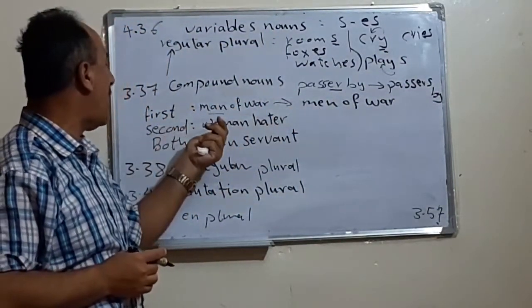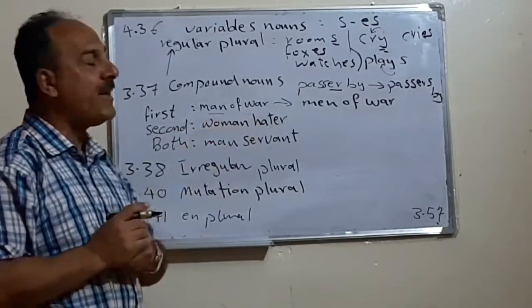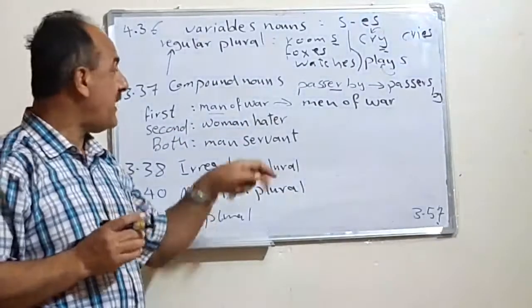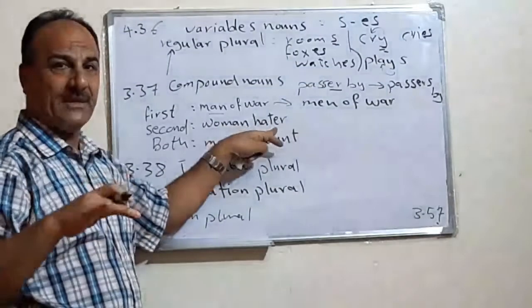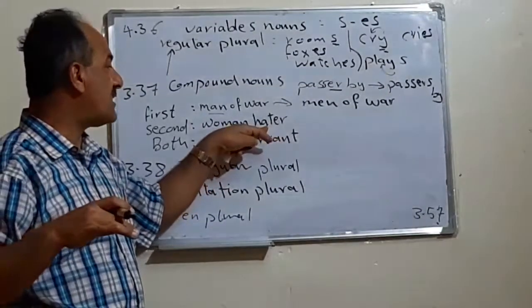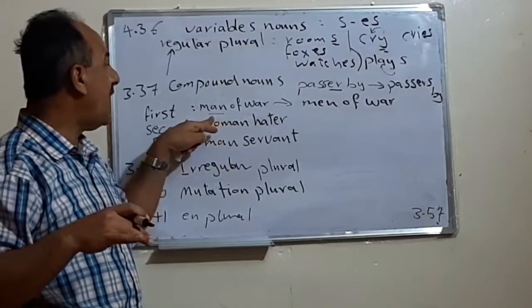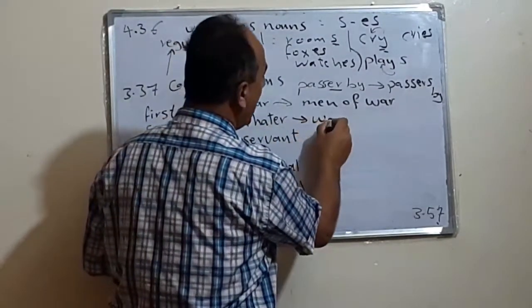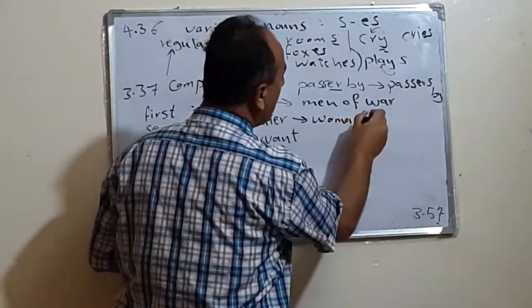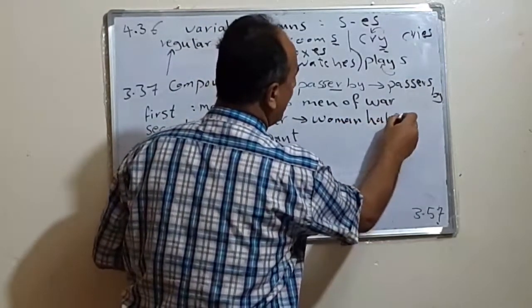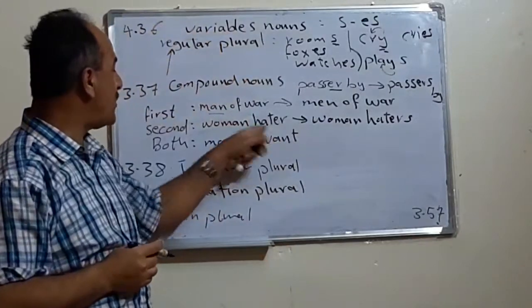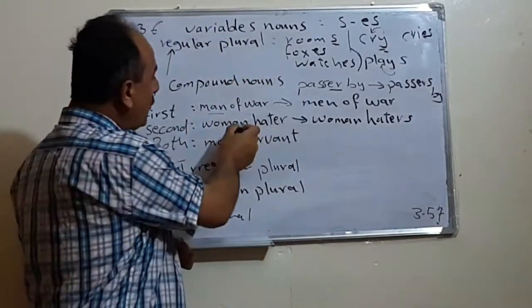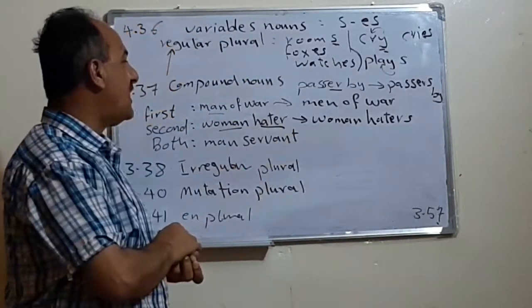Or passerby. We change this one, passers, and then by, passersby. We change this one. Either we change the first, or we change the second one. For example, woman hater. The person who hates or dislikes women. We say woman hater. In this case we change the second. We keep the first one and say woman haters.